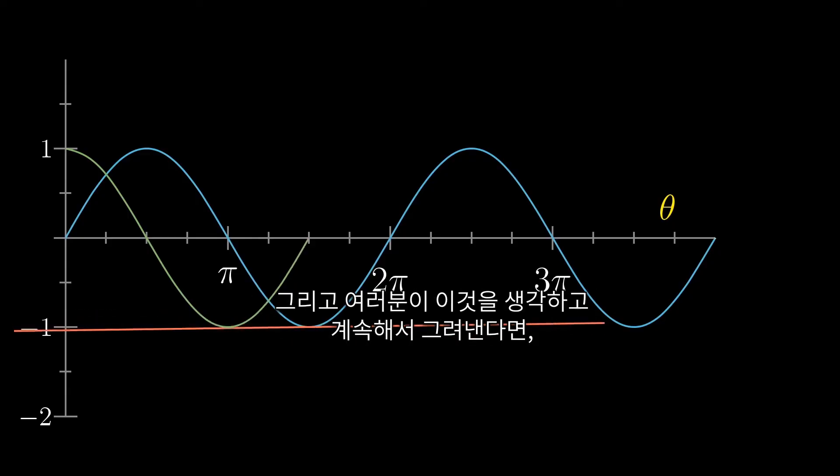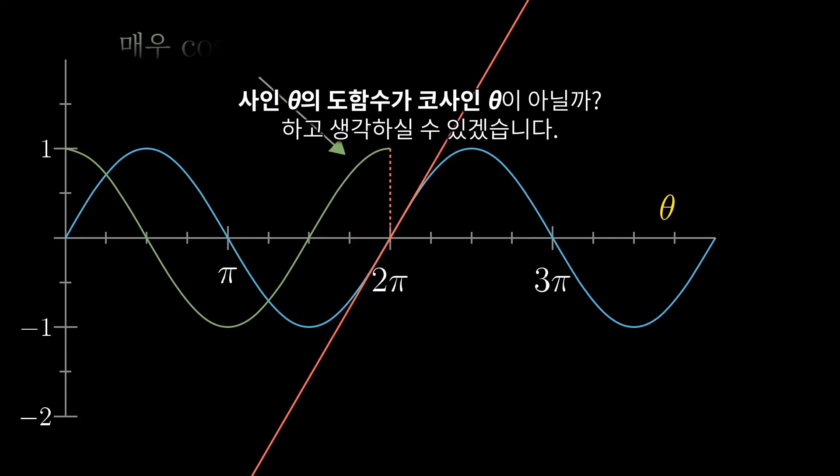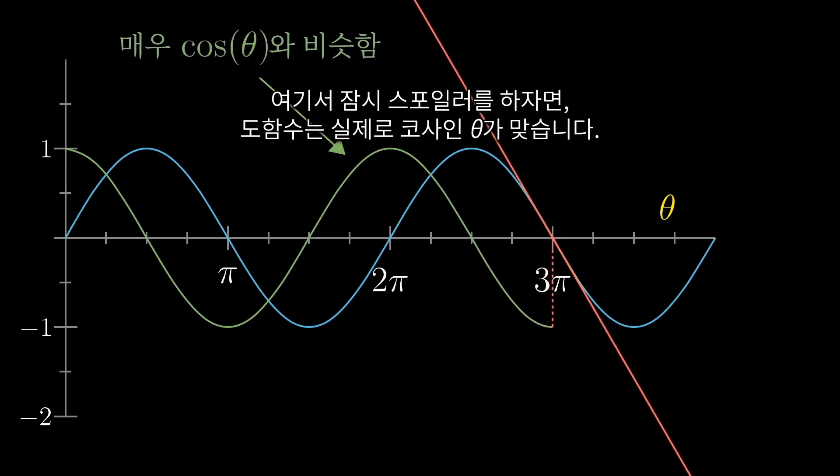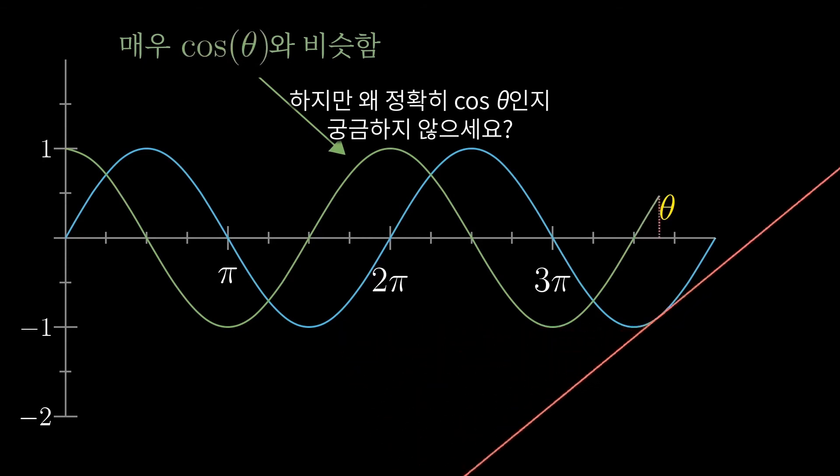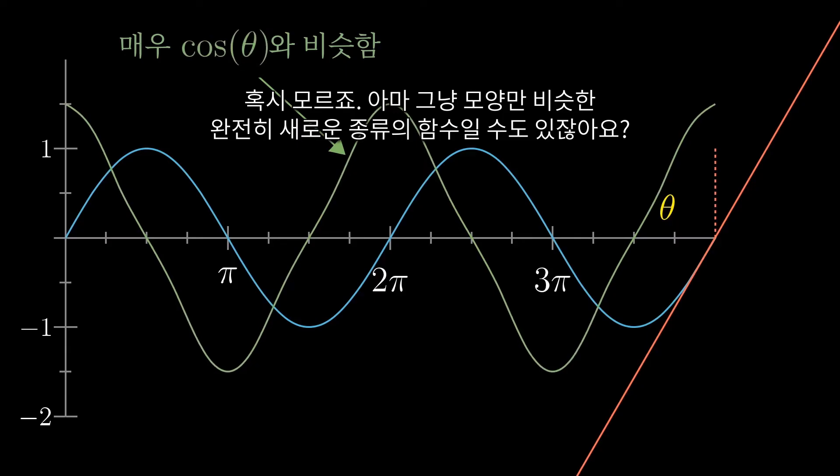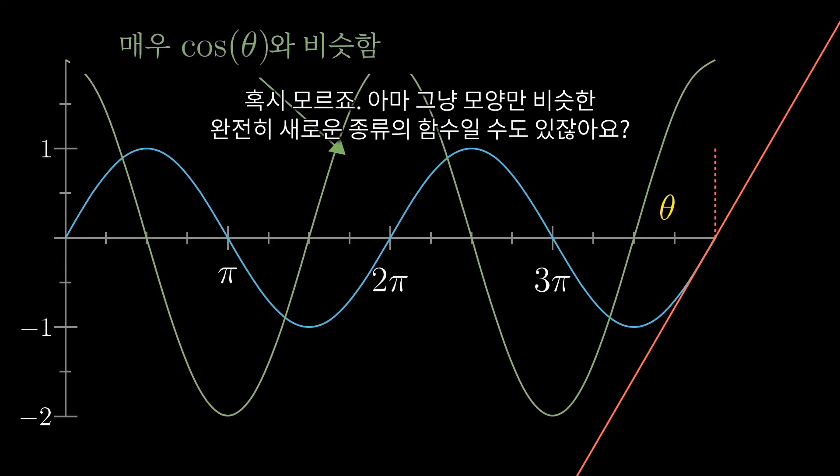And as you continue thinking this through and drawing it out, if you're familiar with the graph of trig functions, you might guess that this derivative graph should be exactly cosine of theta, since all the peaks and valleys line up perfectly with where the peaks and valleys for the cosine function should be. And spoiler alert, the derivative is in fact the cosine of theta. But aren't you a little curious about why it's precisely cosine of theta? I mean, you could have all sorts of functions with peaks and valleys at the same points that have roughly the same shape, but who knows, maybe the derivative of sine could have turned out to be some entirely new type of function that just happens to have a similar shape.